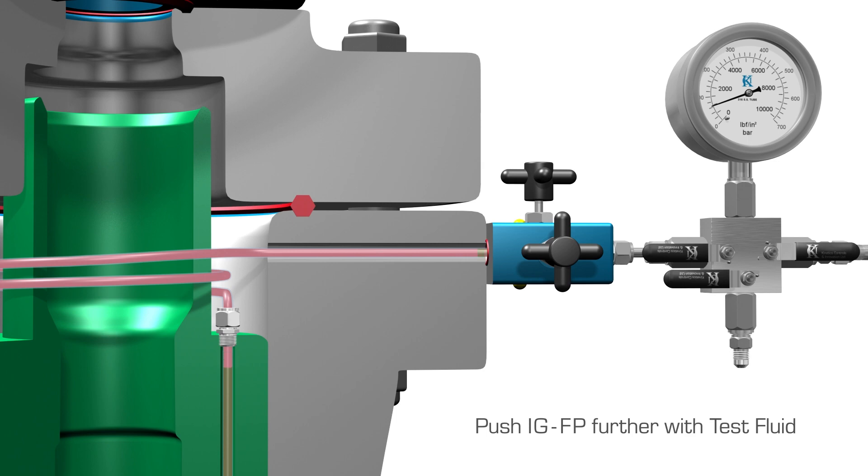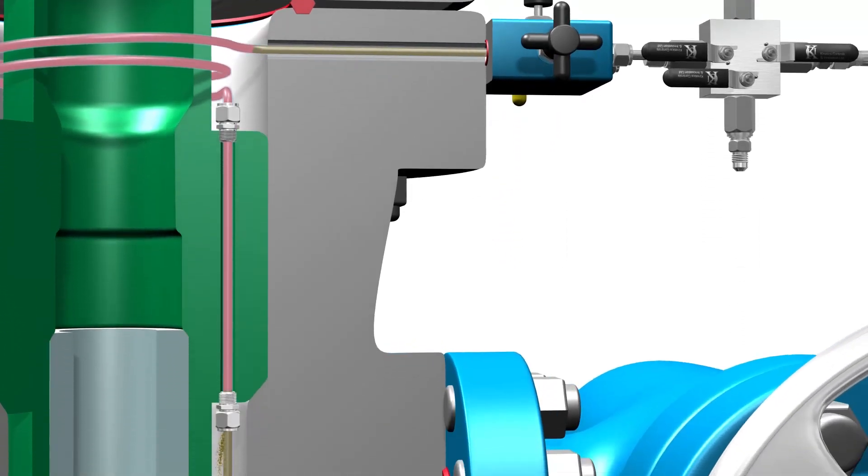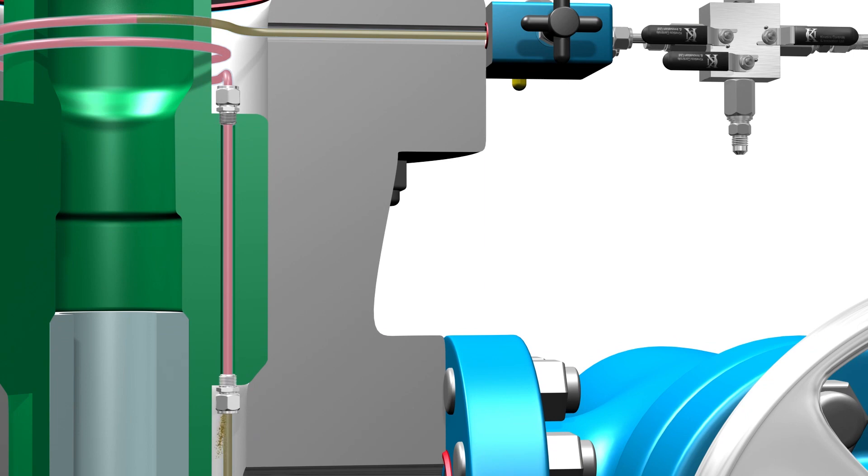If there is more than one leak path, the IGFP will travel further down the control line, being pushed with the test fluid. This has successfully repaired both of these leaks.